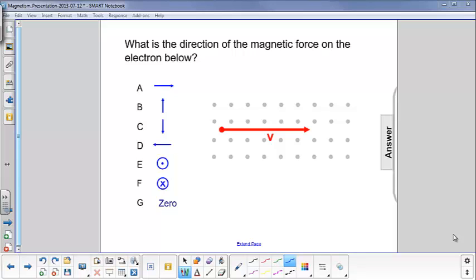What is the direction of the magnetic force on the electron below? Well, the magnetic field here is represented by the dots, which are coming out of the board. The electron is going from left to right.